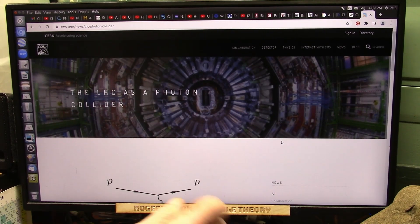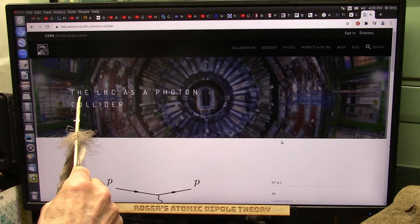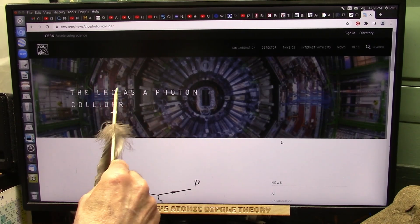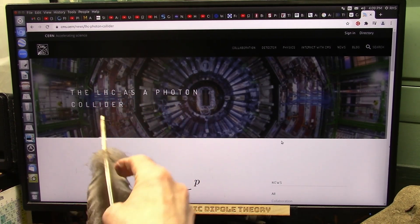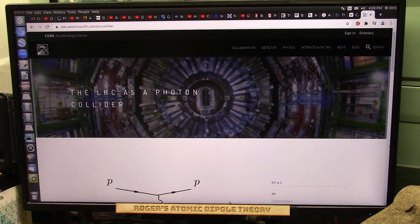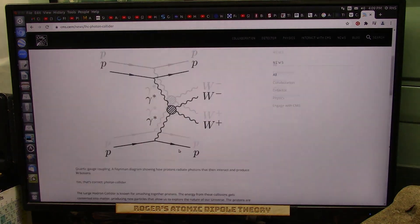Okay, my outstanding friends, let's just start with this. The LHC, Large Hadron Collider, as a photon collider. This is CERN. Well, they don't use photons, they use protons.